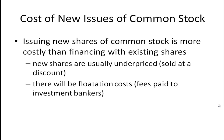It turns out that issuing new shares of common stock is more costly than financing with existing shares. Why is that? Well, new shares are usually underpriced — they're sold at a discount, meaning they're sold below the market value. You can see that commonly in initial public offerings, where a private firm goes public.